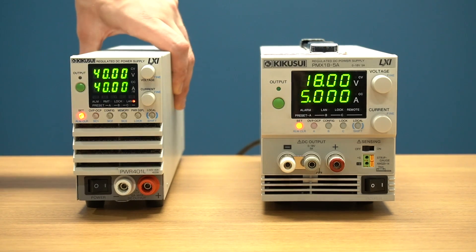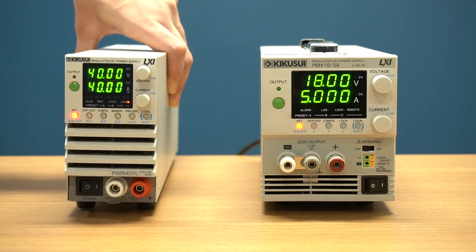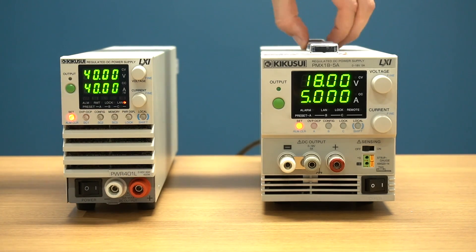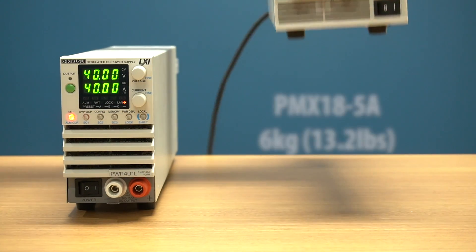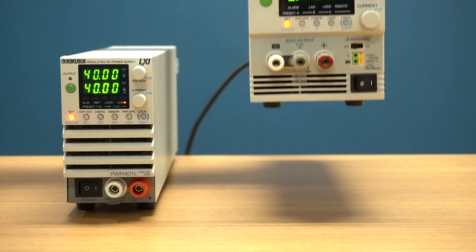The first thing you will notice when comparing these two models is the size difference. Despite having a wider power range than a linear power source of the same power, the PWR01 switching power supply has a much smaller form factor than the linear PMXA because it does not require a bulky transformer to produce DC voltage.